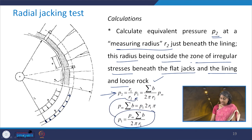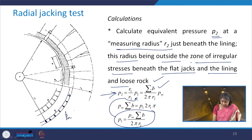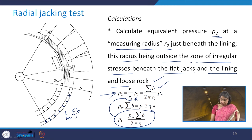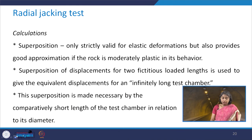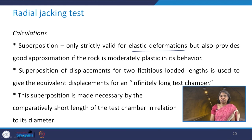So pm × (summation of b) — written together because pm is the maximum pressure in the flat jacks and summation b is the total width of the flat jacks — equals p1 × r1 × π. This type of superposition is only strictly valid for elastic deformation, but it also provides a reasonable approximation if the rock is moderately plastic in its behavior.